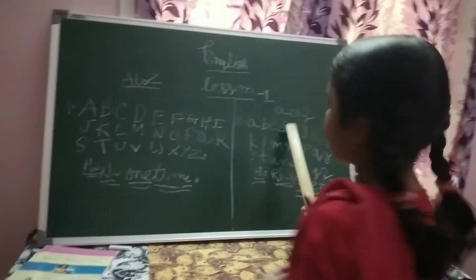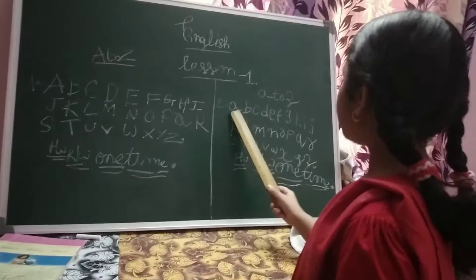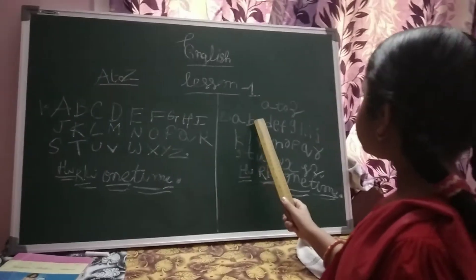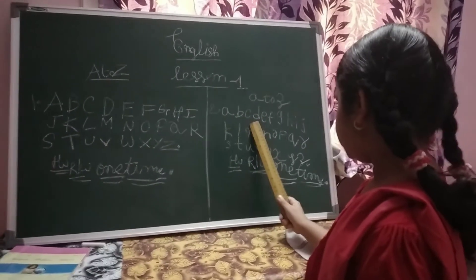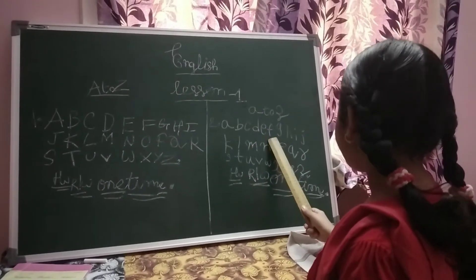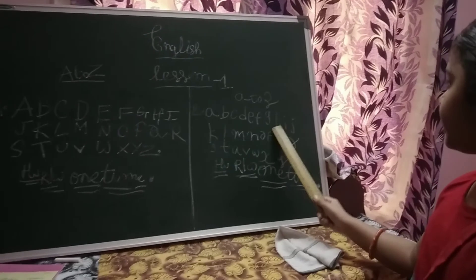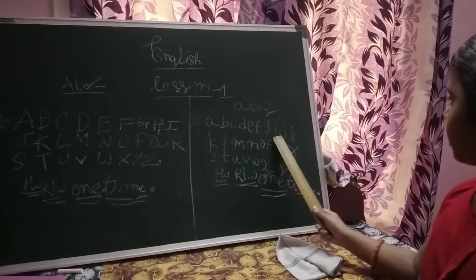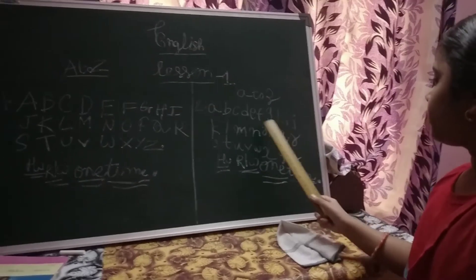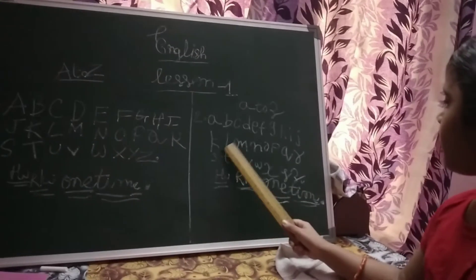Okay, next, small A to Z. A, B, C, D, E, F, G, H, I, G, K, L, M.